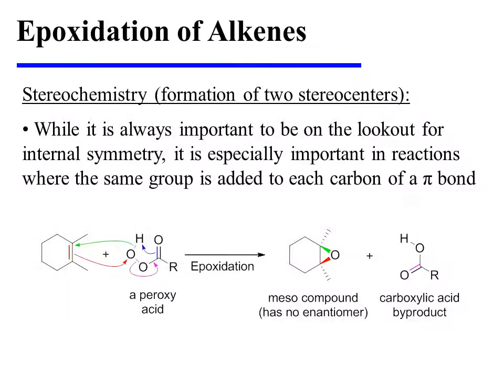It is always important to be on the lookout for internal symmetry, especially in reactions where the same group is added to each carbon of a pi bond. In this very similar epoxidation reaction, a single oxygen of the peroxyacid is added across the alkene pi bond in a syn fashion, meaning that oxygen can be added from above or below the plane of the alkene. However, in this instance those two compounds are actually the same substance. The epoxide product has an internal plane of symmetry, making it a meso compound, which has no enantiomer. So although two stereocenters are formed during this reaction, only a single epoxide product results.